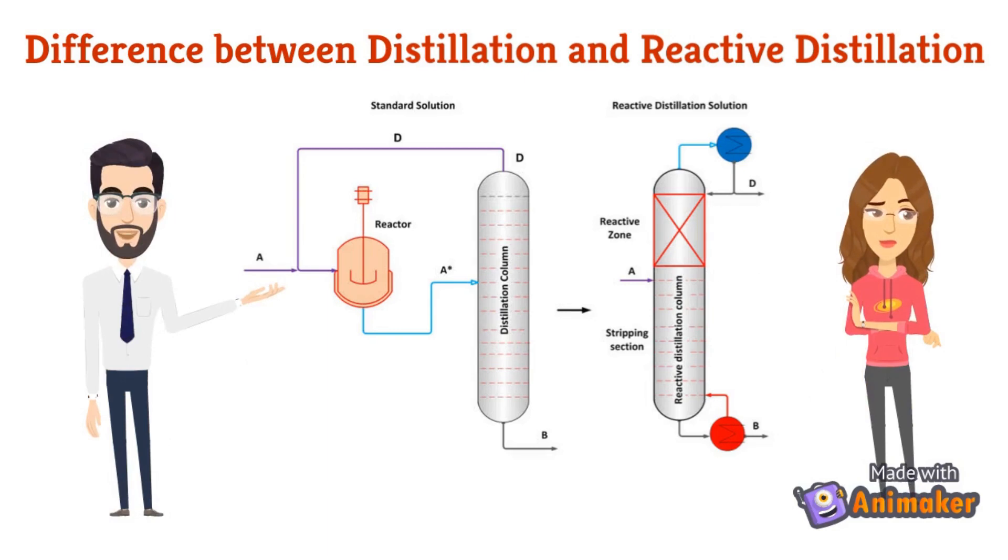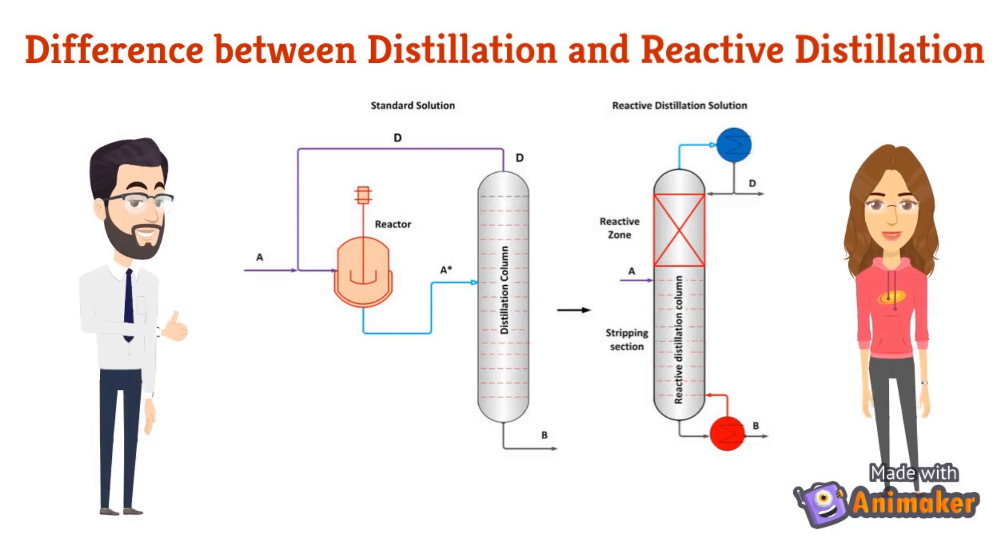In distillation, number of stages will be higher for same value of reflux. RD requires lesser number of stages for the same amount of reflux, which also decreases size of condenser and reboiler.